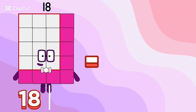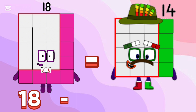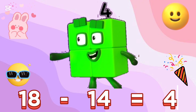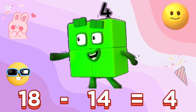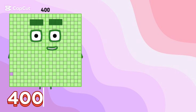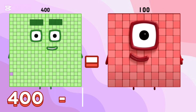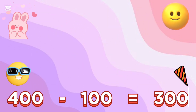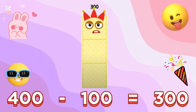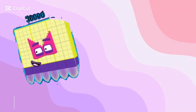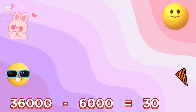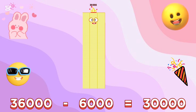18 minus 14 is equals to 4. 400 minus 100 is equals to 300. 36,000 minus 6,000 is equals to 30,000.